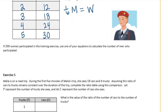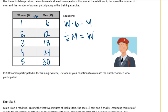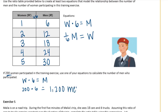If 200 women participated in this training exercise, use one of your equations to calculate the number of men. Women times 6 equals men — so 200 times 6 is 1,200 men who would have participated.